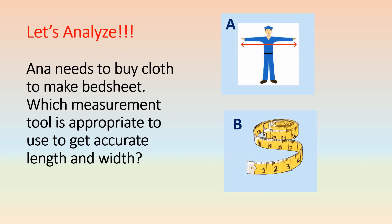Let's analyze. Anna needs to buy cloth to make a bedsheet. Which measurement tool is appropriate to use to get accurate length and width — is it A or B? The correct answer is B.